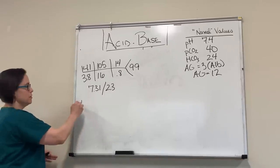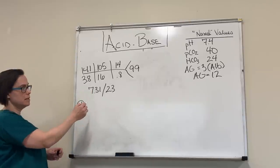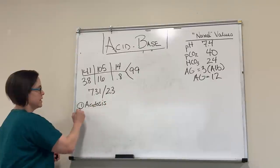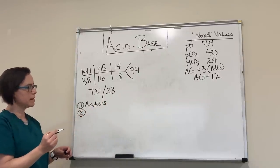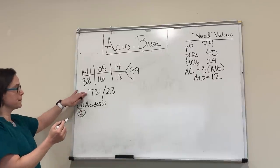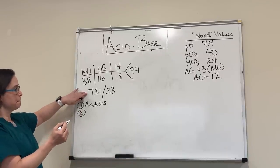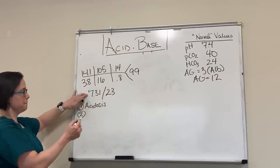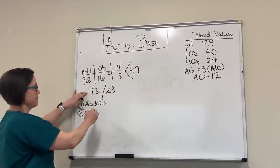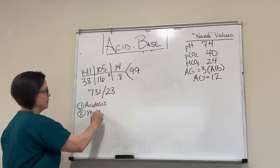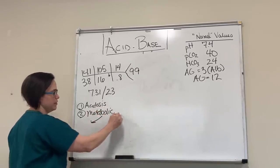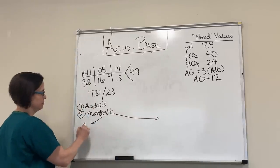We do the exact same steps. Step one — pH 7.31 tells us acidosis. Step two — metabolic versus respiratory. The pH went down and the bicarb also went down, so that makes it a metabolic acidosis. And anytime we have a metabolic acidosis, we do an anion gap and look at compensation.